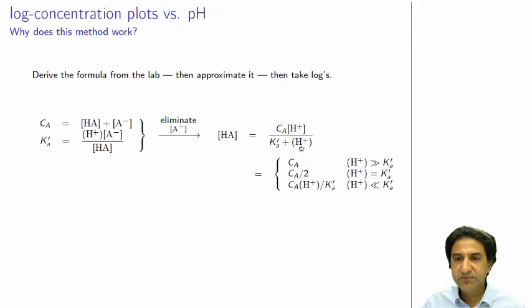And we get CA times H plus divided by H plus, ignoring this term. So we get CA. And that's this first term.